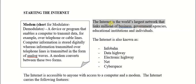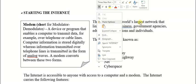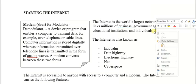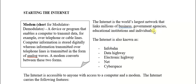The internet is the world's largest network that links millions of businesses, government agencies, educational institutions, and individuals. Businesses use the internet to conduct various transactions and education systems use it as well. In today's 21st century, the internet is the number one way in which we are able to communicate.